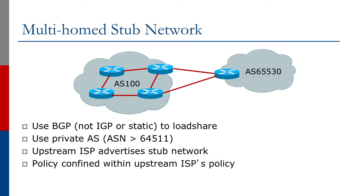What if the stub network is multi-homed such that the second link connects to another upstream provider router or even another point of presence? In this case we use BGP. There may be a temptation to use OSPF or IS-IS, but BGP is the correct and only protocol to use. It is an exterior gateway protocol operating between two different autonomous networks. An IGP is an interior gateway protocol and only operates inside an autonomous system.